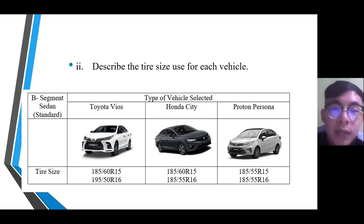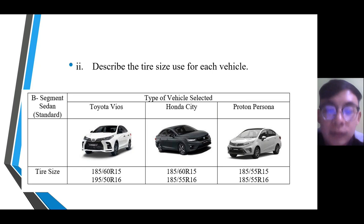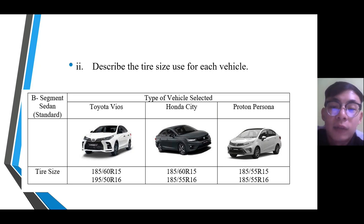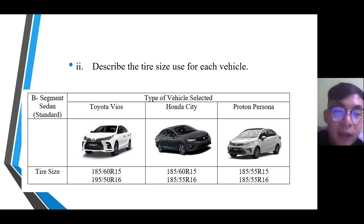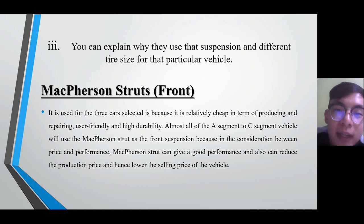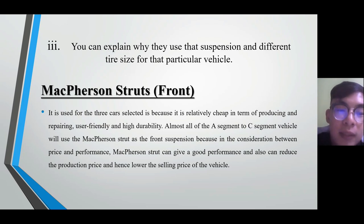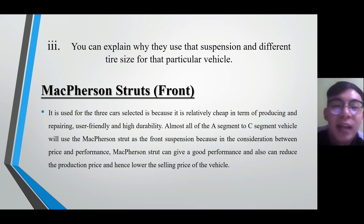For number two, describing the tire size used for each vehicle: for the standard variant, they use a tire size of 185/60 R15 (15-inch tire). For the mid-spec and higher spec, they use 16-inch tires, and for the high variant, they use 17-inch and above. Most of them use McPherson struts for the front suspension system because it is relatively cheap in terms of production and repair, user-friendly, and has high durability.